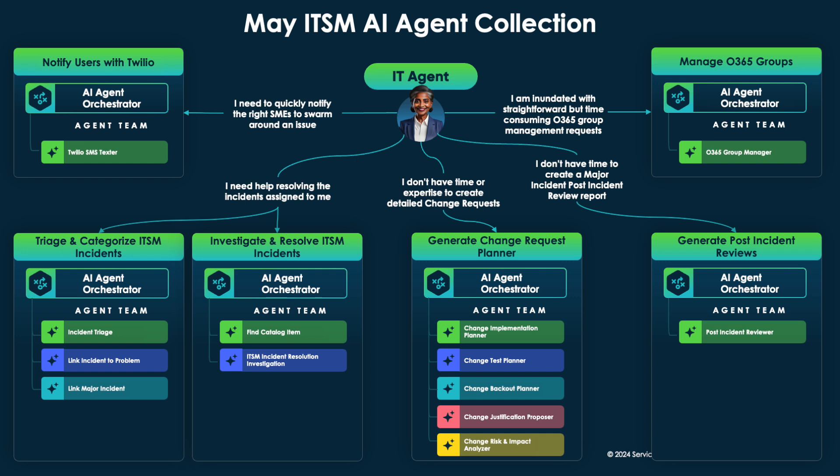If a change is needed, we have a full AI change planner set of agents — from setting the implementation, back-out, test, and justification, to risk and impact analysis. And finally, if a major incident gets created, you can quickly write the post-incident review at the end of that experience using a post-incident report agent.